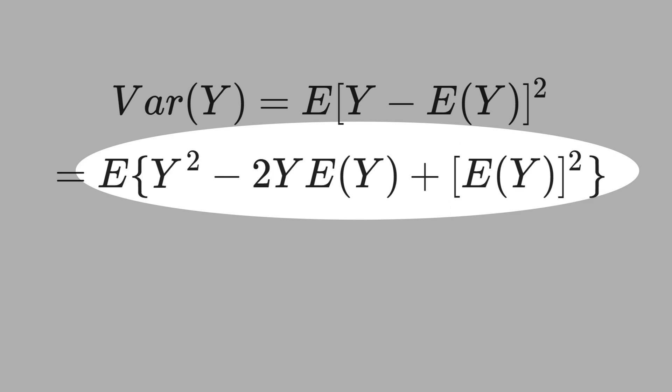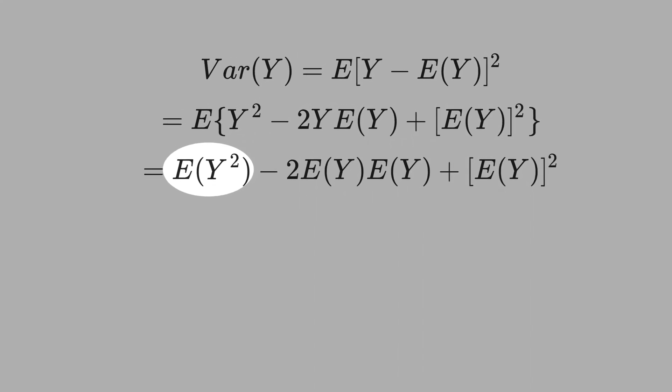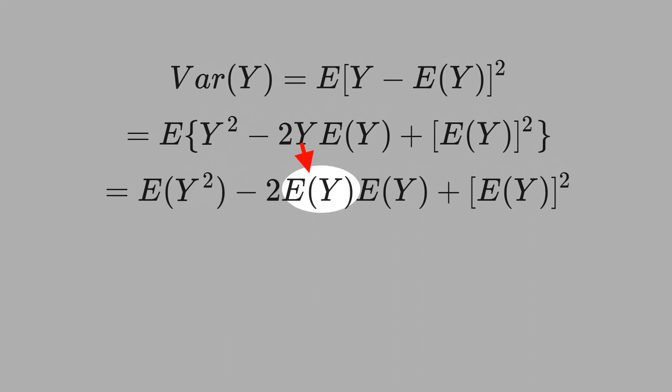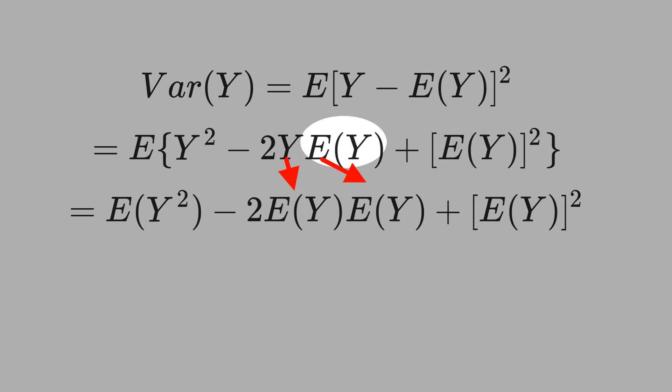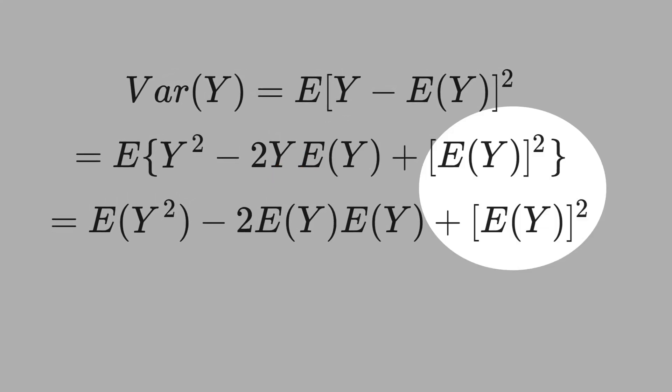Now, let's take the expectation of all terms. And here is the result. We take the expectation of the first term. We take the expectation of Y and treat the expectation of Y as a constant. In the third term, see that the expectation of a constant is a constant. That means nothing changes here.